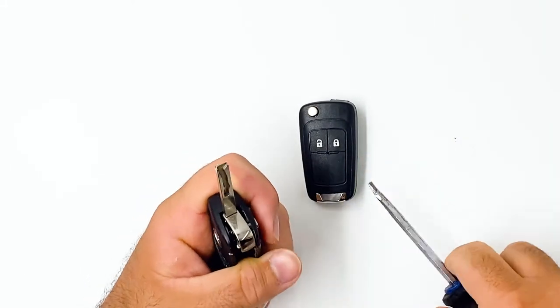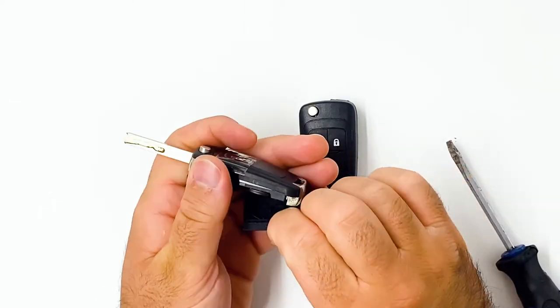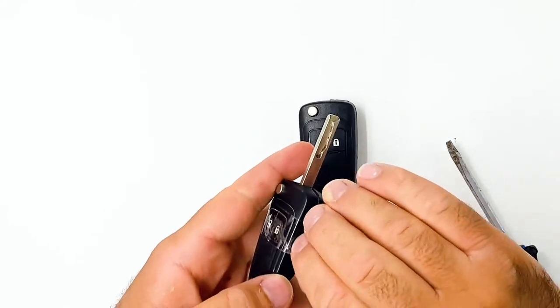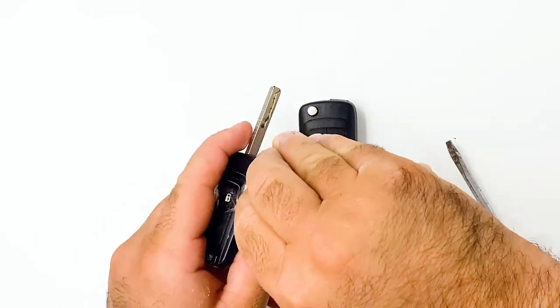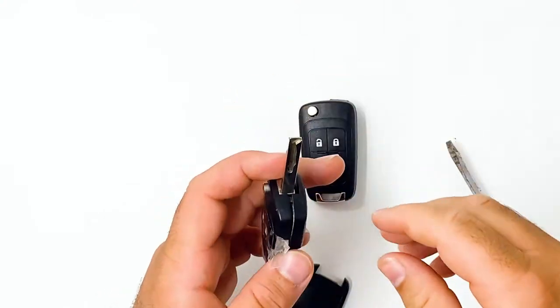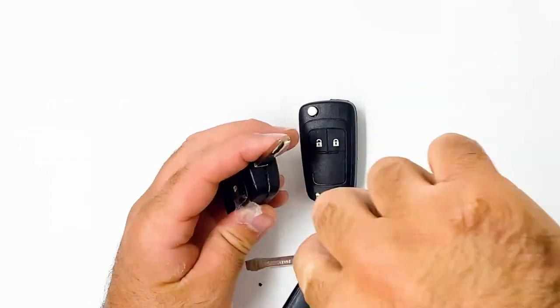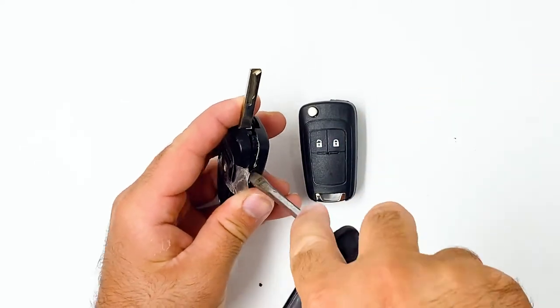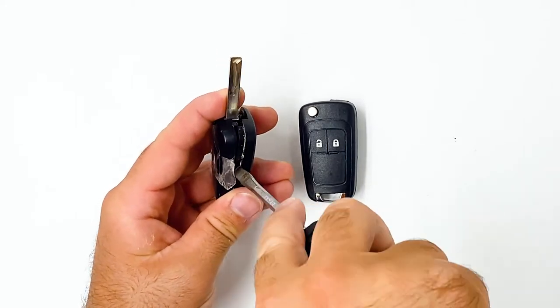Just be careful because this spring will flip out. Once you get to that stage there, you can just get a screwdriver and work your way around. They've got spot glue there, so you just work that off.